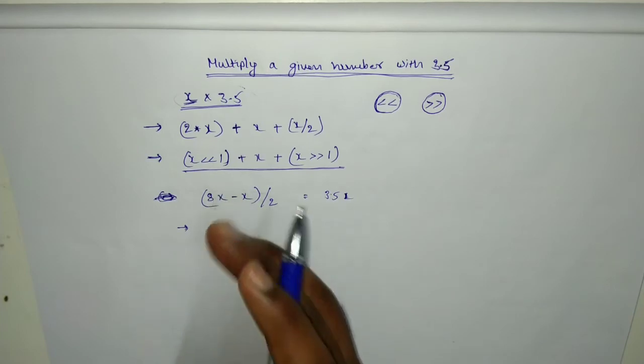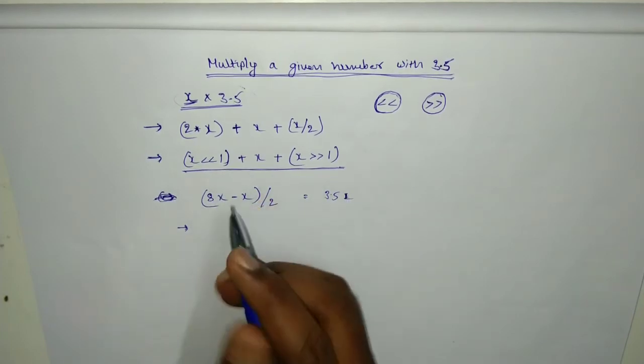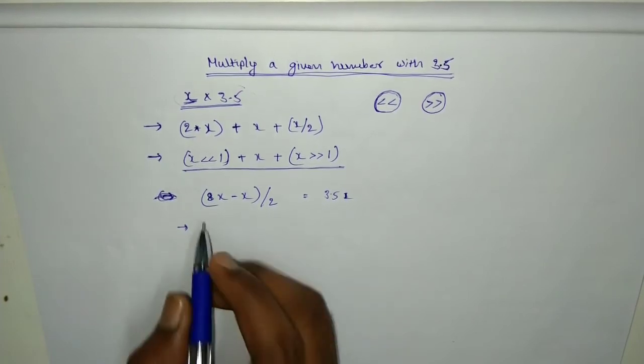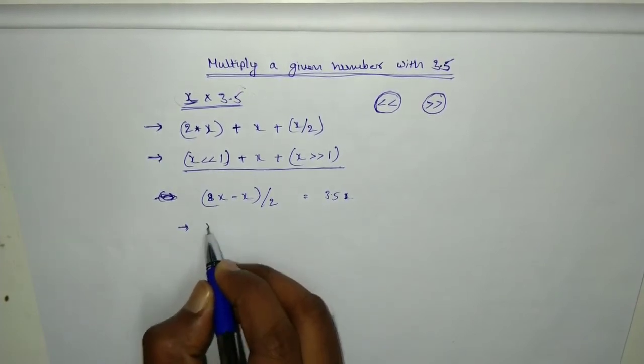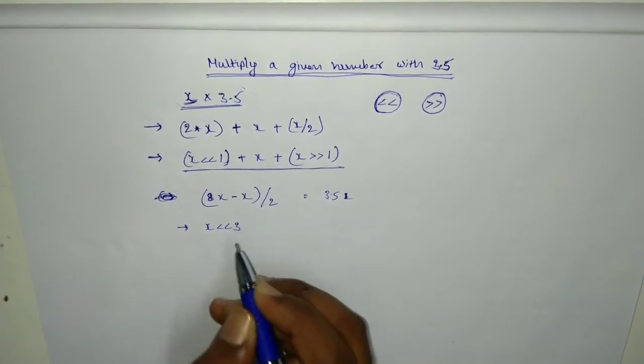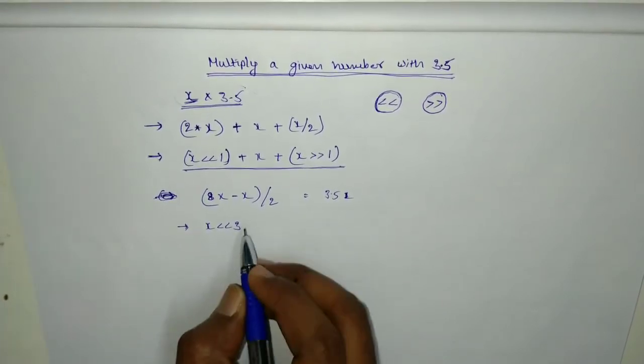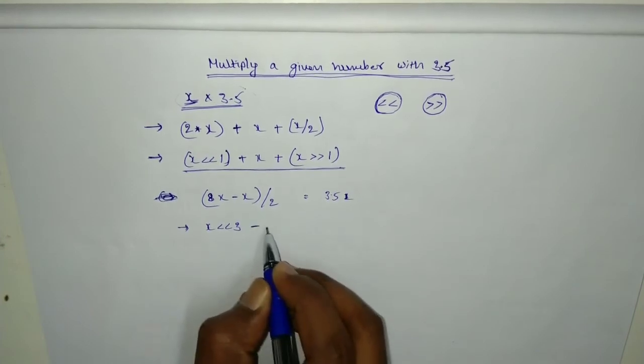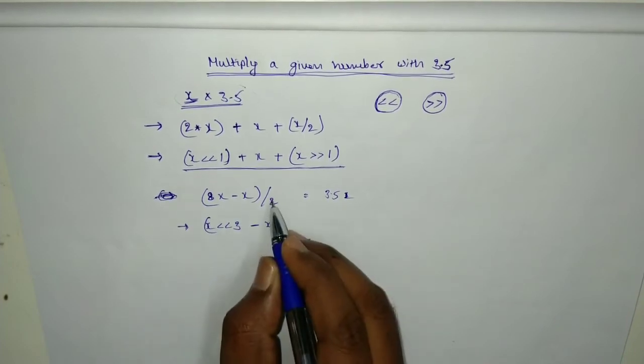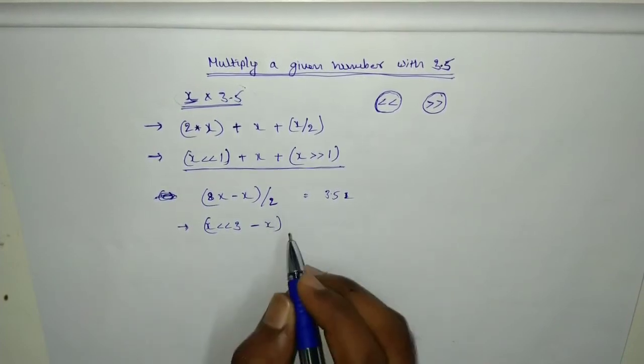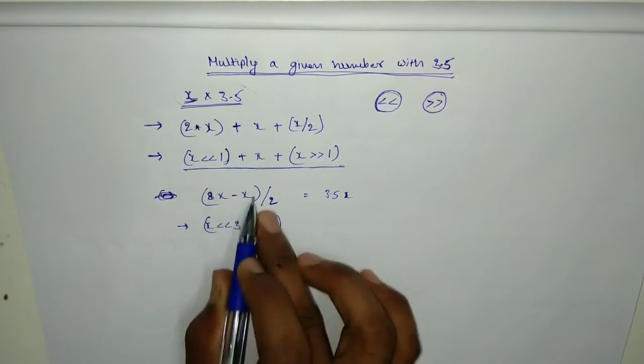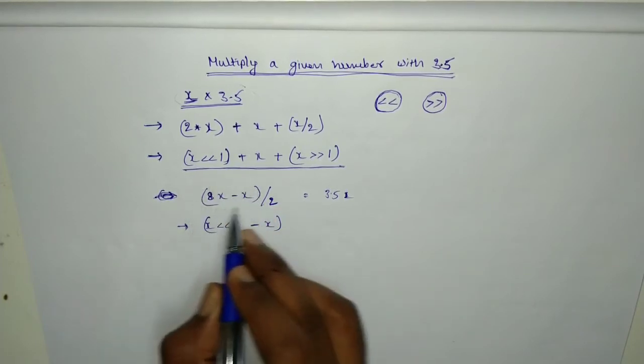And if you do again it will be double again. Like that, if you do 3 times it will become 8 times of x. So x left shift three times, minus x, and by 2 means we need to do right shift once. Now let's take this whole as x by 2, then we need to do right shift once.